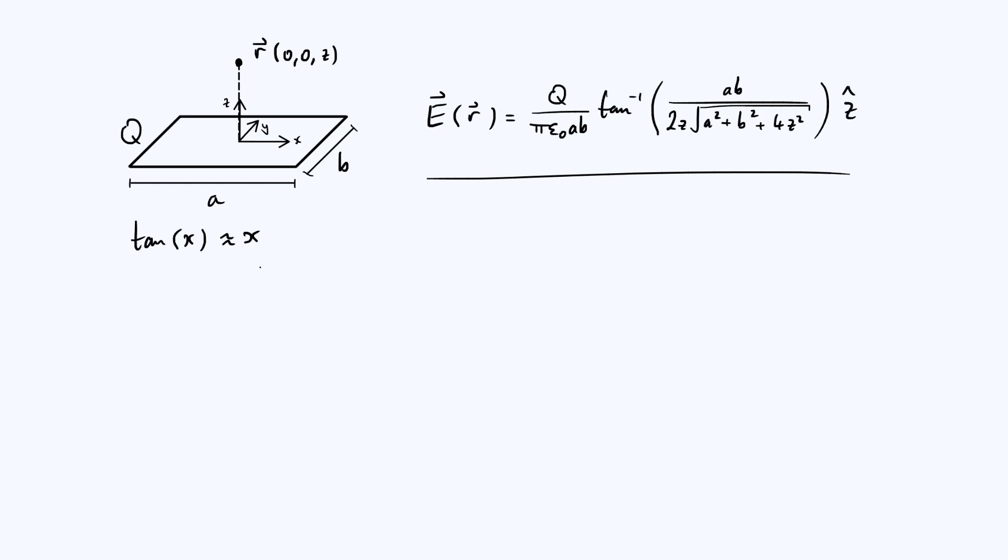Now this is basically just a first order Taylor expansion. The useful property of this for our purposes in this video is that as a direct implication of tan x being roughly x, it's also true that the inverse tan of x is roughly x as well.